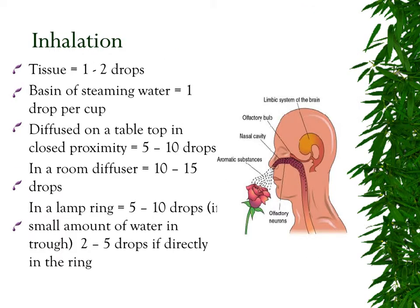For inhalation on a tissue, use only one or two drops — less is more. On a basis of steaming water, one drop per cup. A tabletop diffuser in close proximity uses five to ten drops, while a room diffuser takes about ten to fifteen drops. In a lamp ring, five to ten drops in a small amount of water, or two to five drops directly on the ring. Note that lamp rings heat up and some essential oils are very delicate — this could cause them to denature and impact the therapeutic effect of the oil.